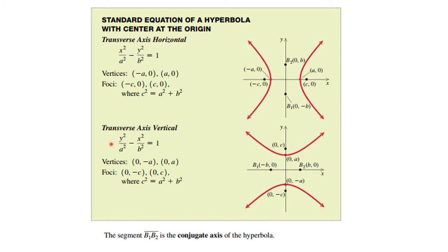Similarly, if the y squared term is positive, it's going to have a vertical transverse axis. So the vertices are going to be at 0, a and 0, minus a. Again, the foci are going to be inside the conic section. And again, in contrast to the ellipse, c squared is equal to a squared plus b squared.